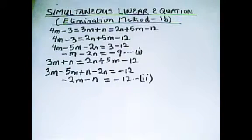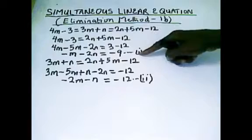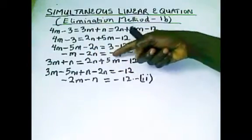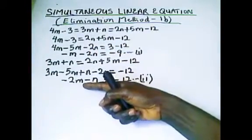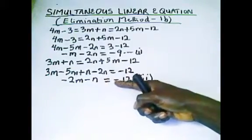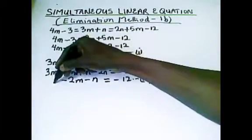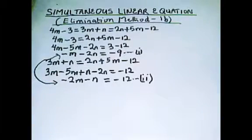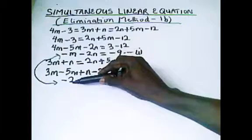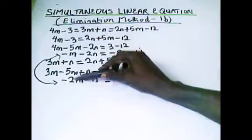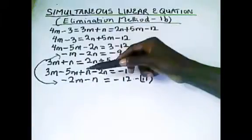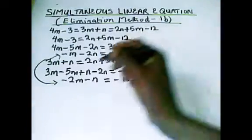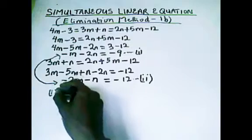So we have equation 1: minus m minus 2n equals minus 9, and equation 2: minus 2m minus n equals minus 12. Let's make a quick observation — comparing the coefficients of m in both equations, equation 1 has minus 1 and equation 2 has minus 2. The coefficients are different, so we cannot use the elimination method directly. To use elimination, the coefficient of the variable we want to eliminate must be the same.